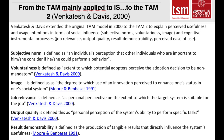Venkatesh and Davis extended the original TAM to TAM 2 in 2000 to explain perceived usefulness and usage intentions in terms of social influence — that is, subjective norms, voluntariness, and image — and cognitive instrumental processes — that is, job relevance, output quality, result demonstrability, and perceived ease of use. Subjective norms are defined as an individual's perception that other individuals who are important to him consider whether he should perform a behavior and use a given innovation.